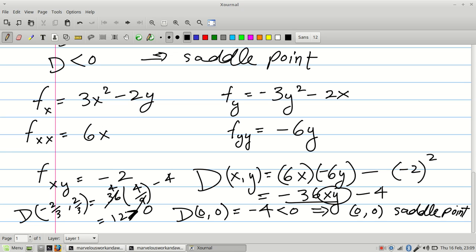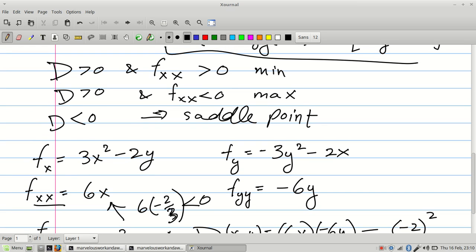So it's either a local min or a local max. To figure out the answer, all we have to do is see what the sign is on Fxx. Well, I've got to plug in an x value of negative 2 thirds, so that means that this guy is going to be 6 times negative 2 thirds. And we don't have to evaluate this, really. It's going to be negative. So the point negative 2 thirds, 2 thirds is going to be a local max.